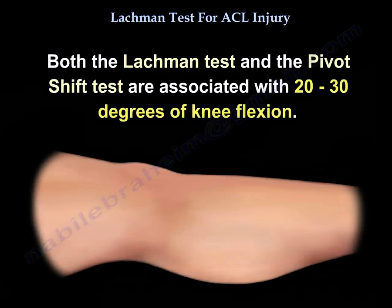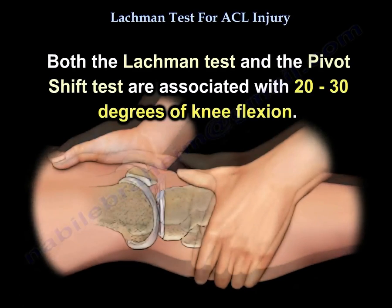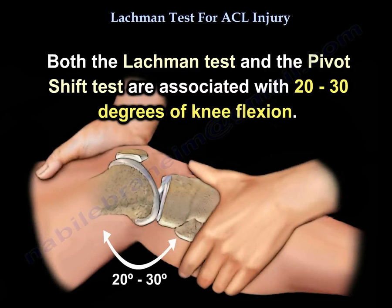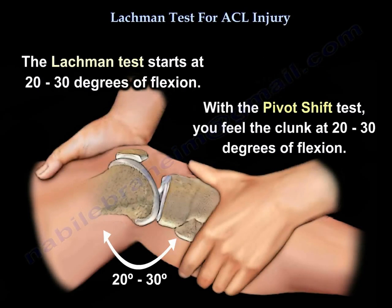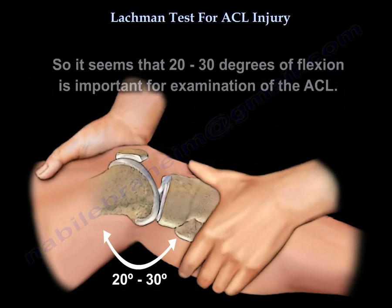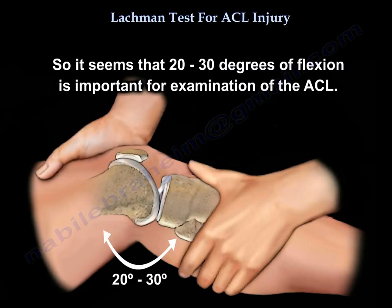Both the Lachman Test and the pivot shift test are associated with 20 to 30 degrees of knee flexion. The Lachman Test starts at 20 to 30 degrees of flexion, and with the pivot shift test, you feel the clunk at 20 to 30 degrees of flexion. So 20 to 30 degrees of flexion is important for the examination of the ACL.